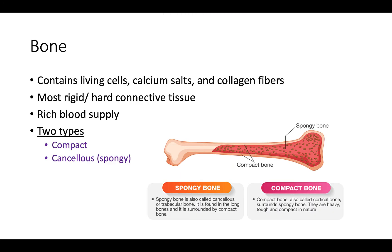Bone contains living cells — so it's not dead — along with calcium salts and collagen fibers. It's the most rigid and hard connective tissue, and it has a really strong blood supply, which is why it heals quickly compared to cartilage. There are two types: compact bone and cancellous or spongy bone — also called trabecular. Spongy bone is found in long bones and is surrounded by compact bone, also called cortical bone, which is heavier and tougher. We'll get into more detail about bones when we reach the skeletal system.